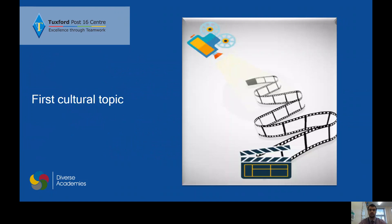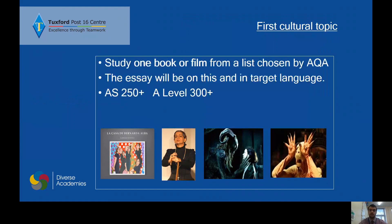Each year you'll discuss a cultural topic. The first one you will do at the end of the first year, and it will be one book or a film from a list chosen by AQA. For example, we look at a play, La Casa de Bernarda Alba this year, as well as El laberinto del fauno, which is a film. You write an essay — your writing paper is about these cultural topics, so you'll be expected to write 300 words to discuss the themes and features in that cultural topic.